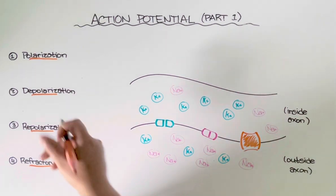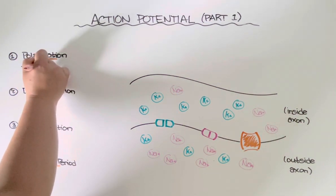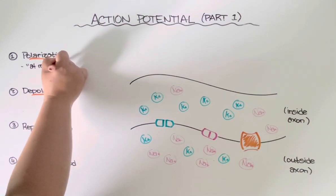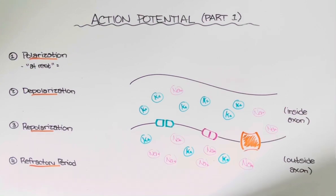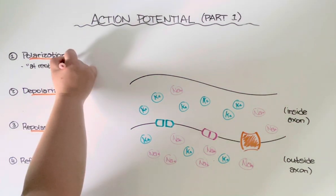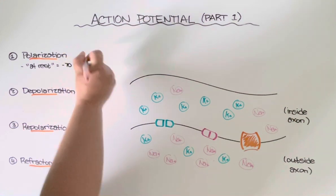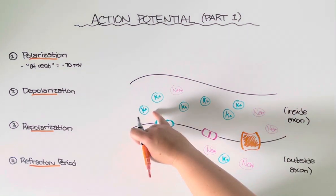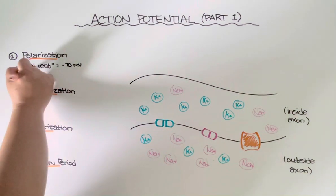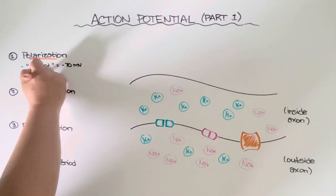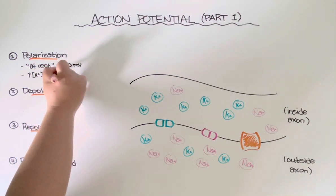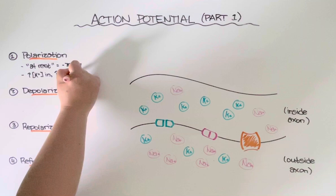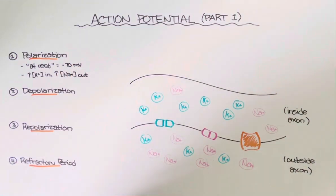So polarization is what the cell looks like when it is at rest. This is before it has received any kind of signal, and the reason why we call it polarized when it's at rest is because it actually has a slightly negative charge inside the axon relative to outside here in this intracellular space. Now when the cell is at rest it tends to have a high concentration of potassium inside the cell and a high concentration of sodium outside. However they are not an equal distribution like what you see here and I'll explain why.